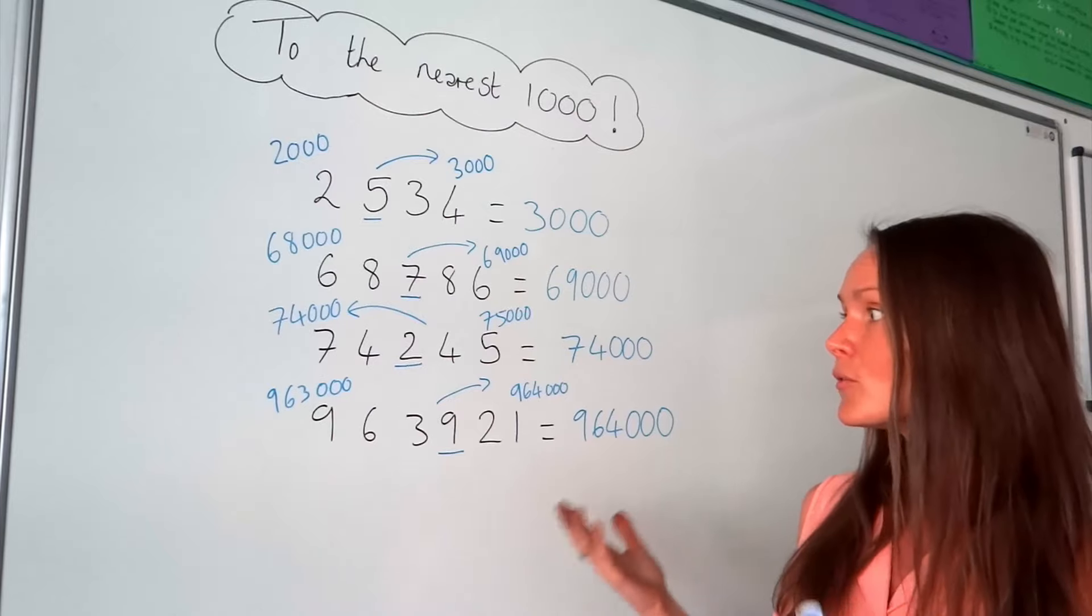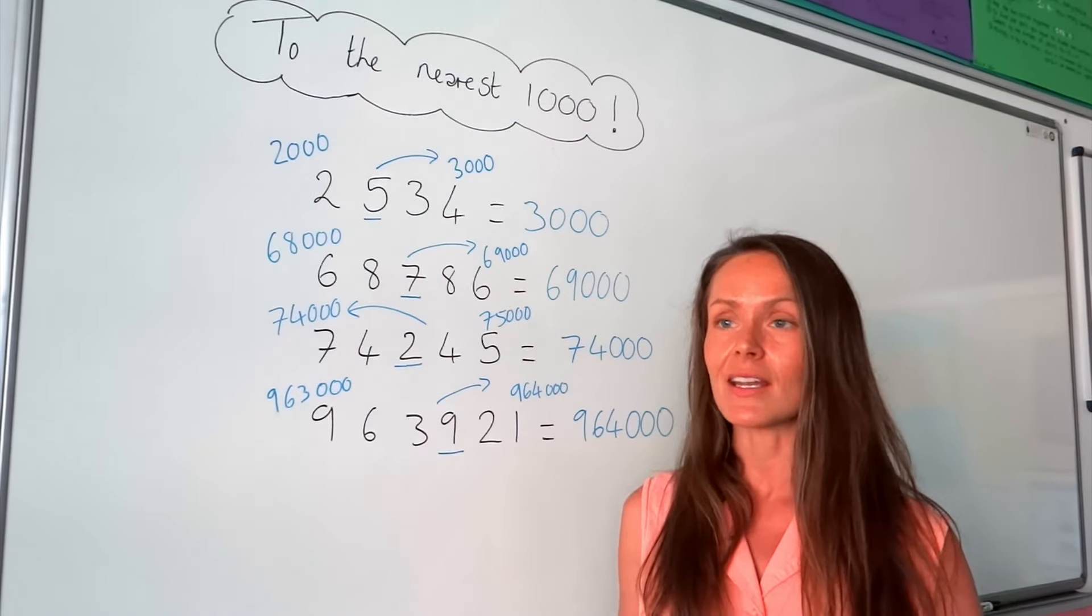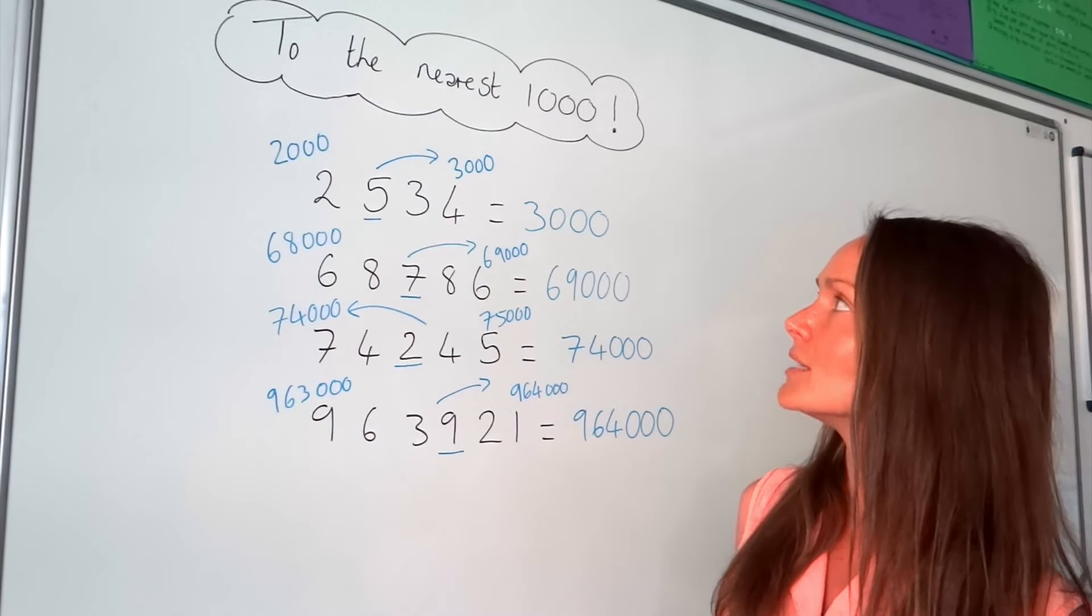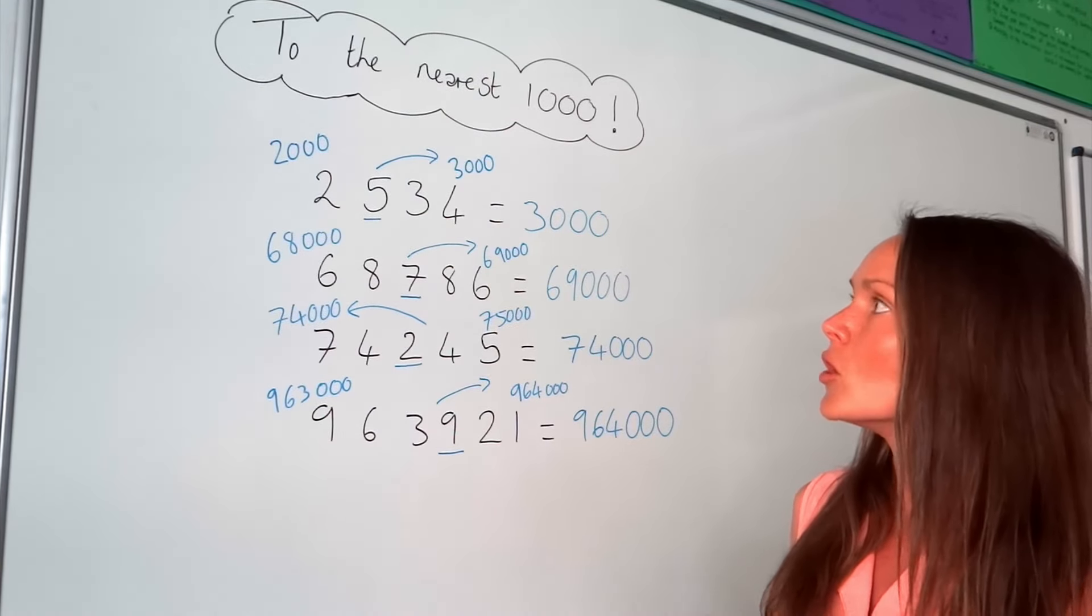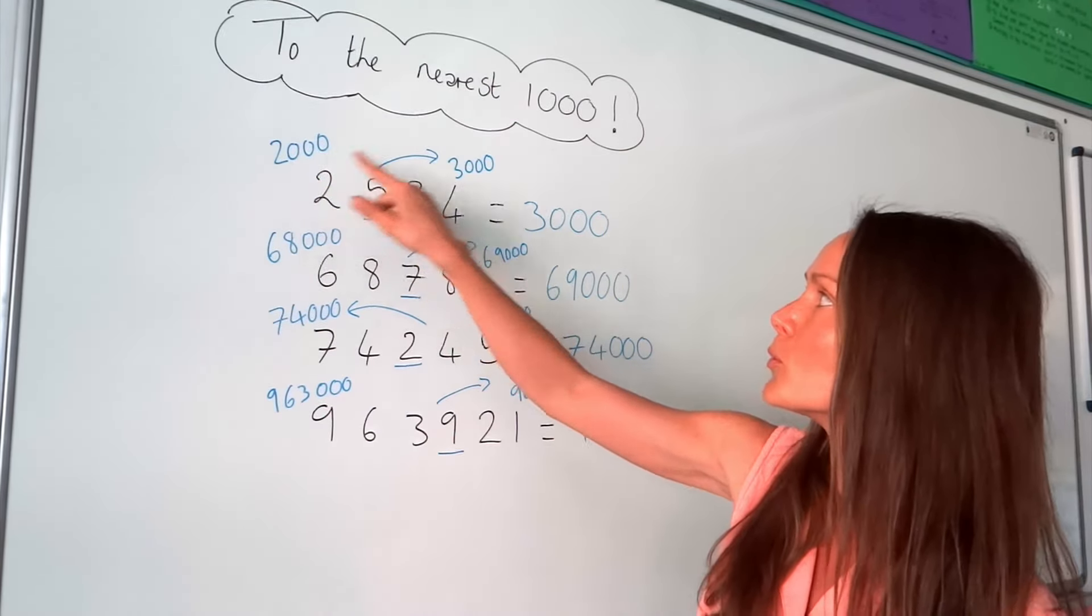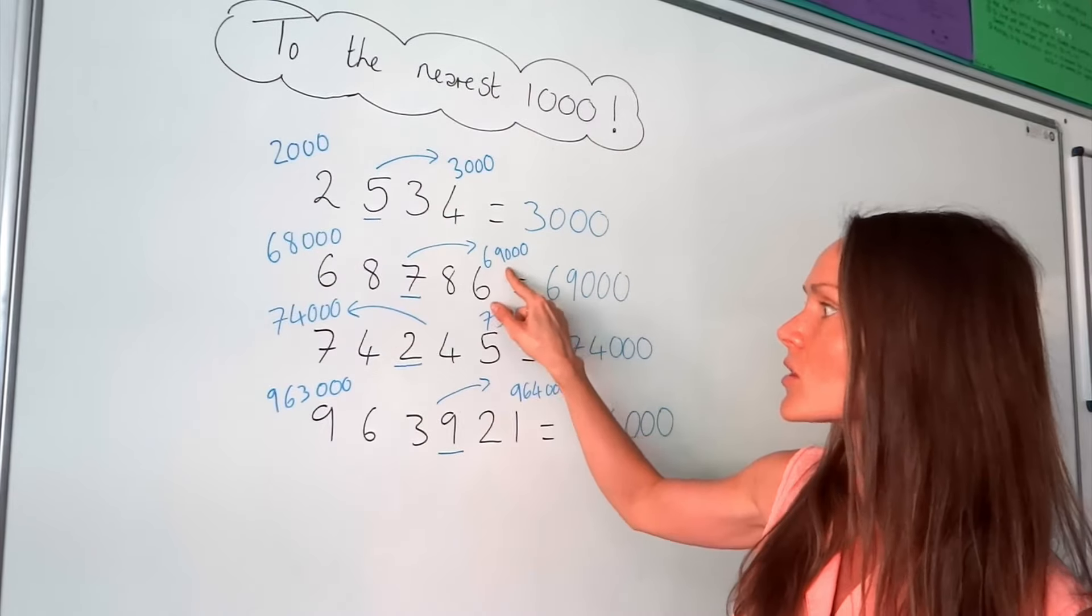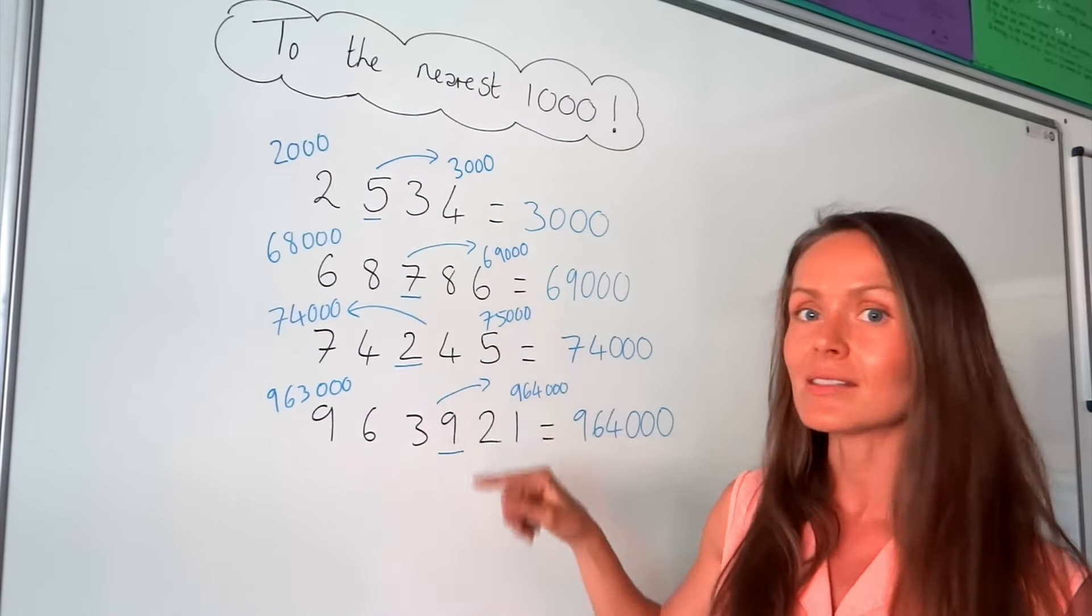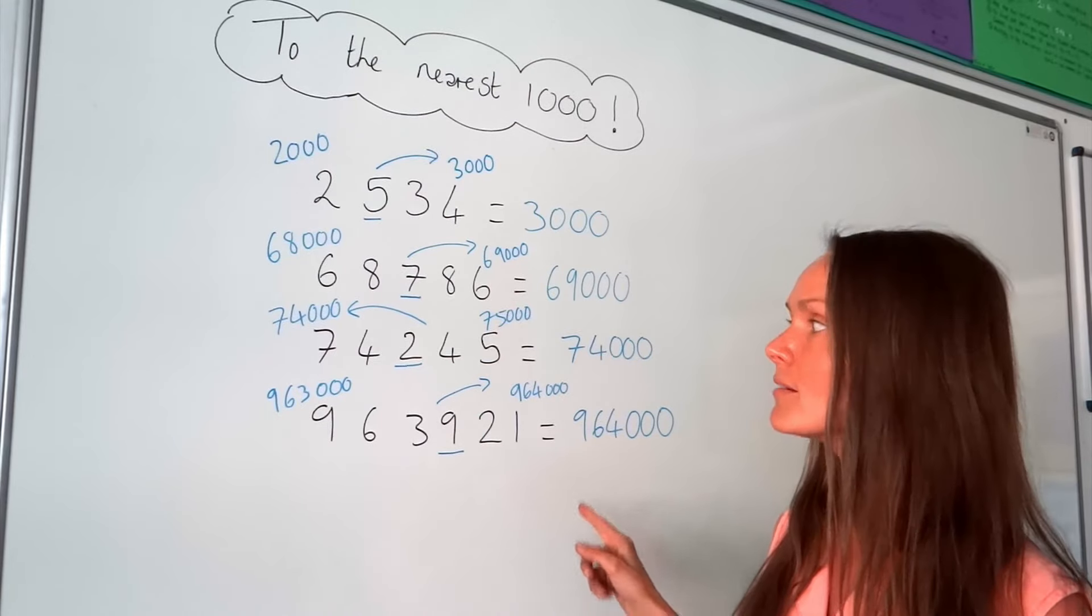So some of you might find these questions easy and you might find them as just being common sense. But if you struggle with finding the nearest 1,000, you can just write out the multiples of 1,000 that fall either side of your number, and then check the third from last number to see if you're rounding up or if you're rounding down.